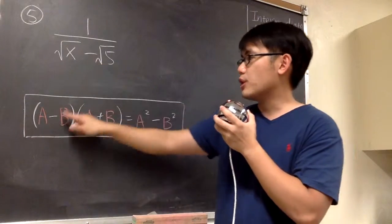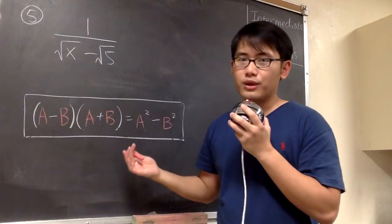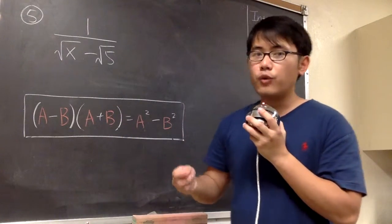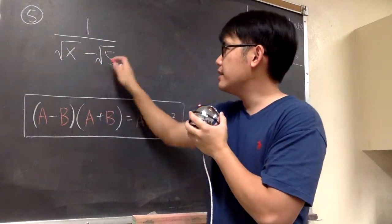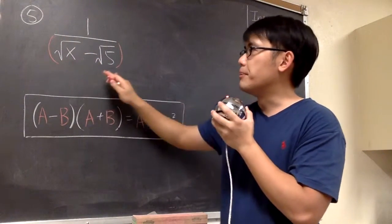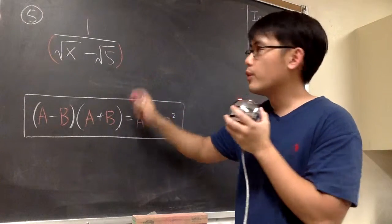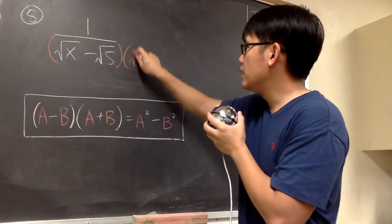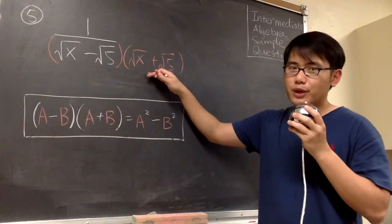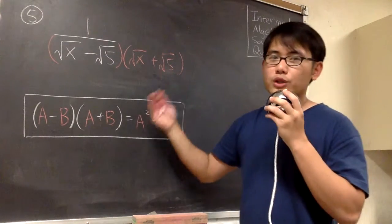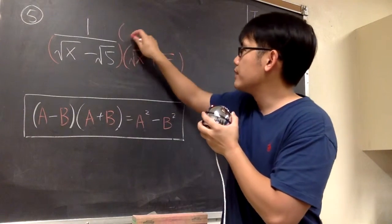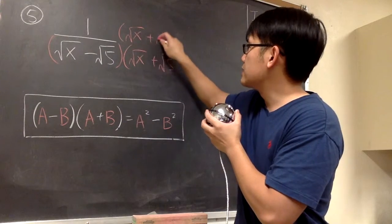We also see the subtraction in the middle. In order for us to use this formula, we need the a plus b. Therefore, we will take this and multiply by the a plus b, where a is the square root of x and b is the square root of 5. So we will multiply by square root of x plus square root of 5. This is also called the conjugate when we're trying to rationalize the denominator. We will also multiply this on the numerator as well — square root of x plus square root of 5.